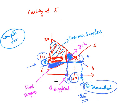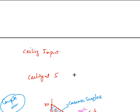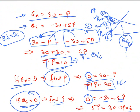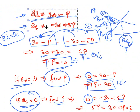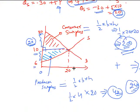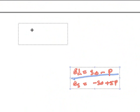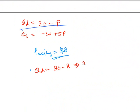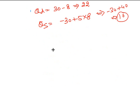To compute the losses, let's use our equations. The ceiling price is set at $8. The quantity demanded will be 30 minus 8, so quantity demanded is 22. But the quantity supplied will be minus 30 plus 5 times 8, which equals 40 minus 30, so you will supply only 10 units. Earlier you were supplying 20 units at a price of 10, but at a price of $8 you are going to supply only 10 units.